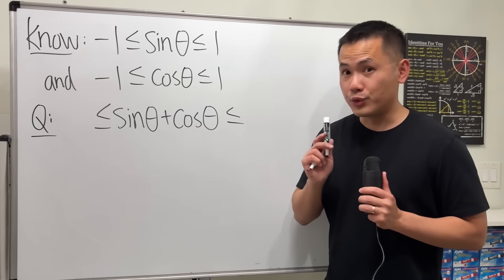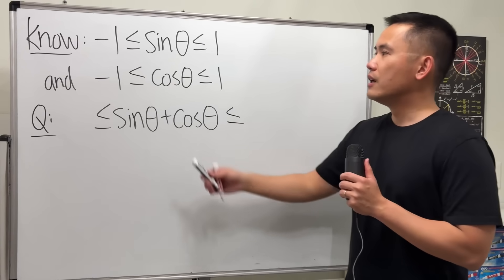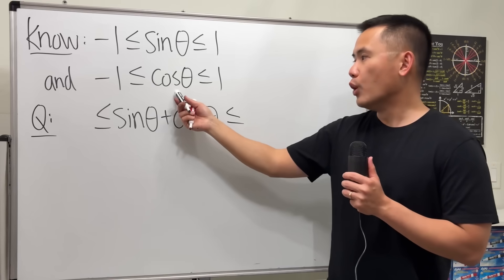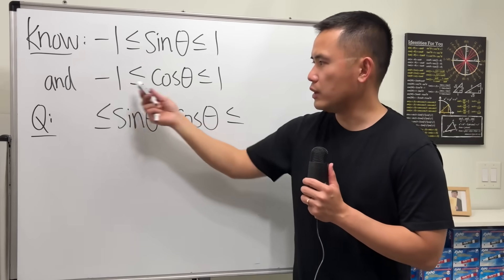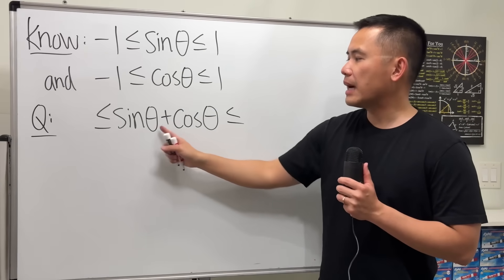Okay, this question is going to trick so many people, especially when you present it like this. First we know that sine theta is between negative 1 and 1, and cosine theta is also between negative 1 and 1. So now the question is, what if we add them up? Sine theta plus cosine theta is going to be between what and what?